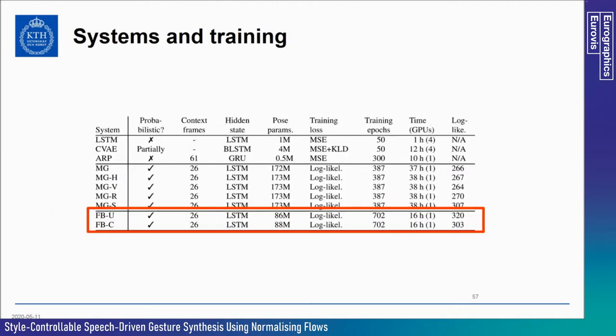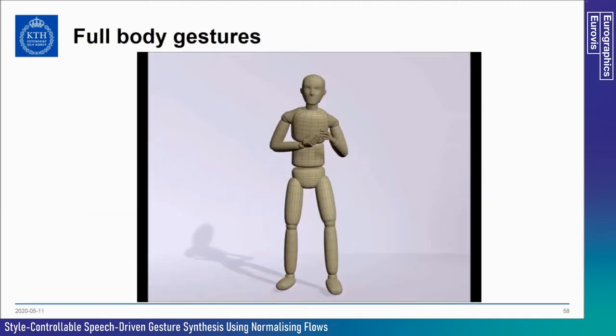We also trained two systems with full body gestures. The first is completely uncontrolled — all motion is generated from speech. In the second system, we provide the location and direction on the ground plane as explicit control signals, useful for making the character stand still or take steps to face a certain direction.